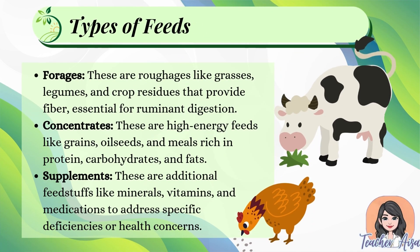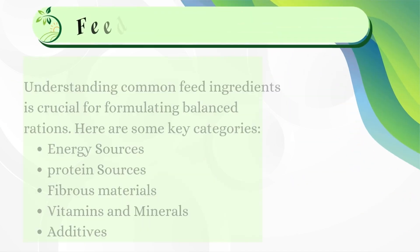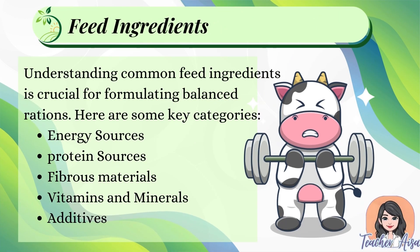There are different types of feed. Forages are roughages like grasses, legumes, and crop residues that provide fiber essential for ruminant digestion. Concentrates are high-energy feeds like grains, oil seeds, and meals rich in protein, carbohydrates, and fats. Supplements are additional feedstuffs like minerals, vitamins, and medications to address specific deficiencies or health concerns.